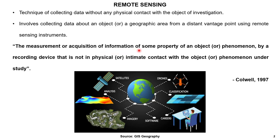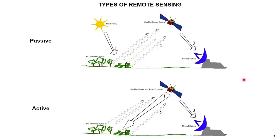The measurement or acquisition of information of some property of an object or a phenomenon — it may be flooding, climate change, forest fire, volcanic eruption — by a recording device which is not in physical contact with the object but is able to gather the information. This definition was given by Colwell in 1997. There are two types of remote sensing: passive remote sensing and active remote sensing.